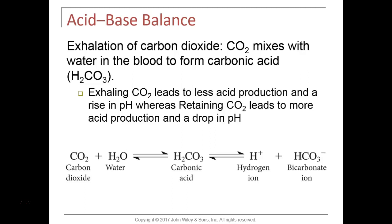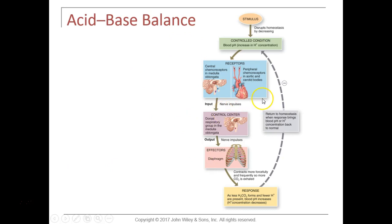By reabsorbing more bicarbonate, we buffer acid in the blood and bring blood pH up. By excreting more hydrogen in urine, the urine becomes more acidic and we remove acid from the blood. The hydrogen in urine is not lost as free hydrogen — urinary buffers exist, including the ammonia and phosphate buffering systems. Ammonia is a nitrogenous waste product from deamination of proteins.